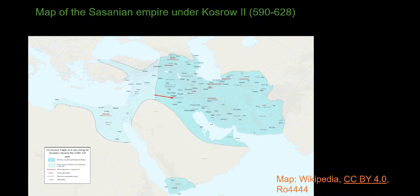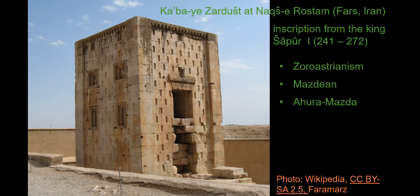The Sassanian Empire, with its capital situated at Ctesiphon, stretched from Armenia to Central Asia. The main religious practice within the Sassanian Empire was Zoroastrianism, and the kings proclaimed themselves as Mazdean, or worshippers of Mazda, in their inscriptions — Ahura Mazda being the supreme god in the Zoroastrian pantheon.